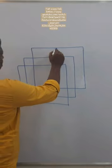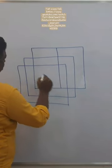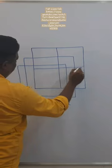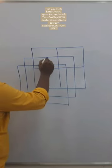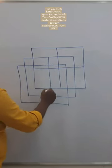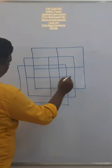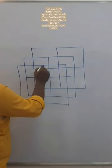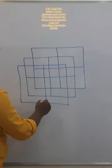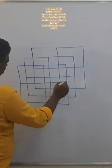The next step is to separate each square into four equal parts, second square into four equal parts, and the third square into four equal parts.